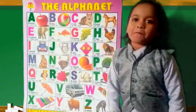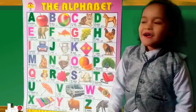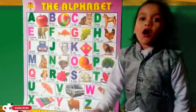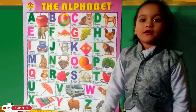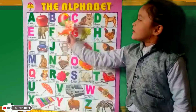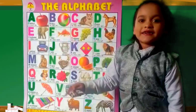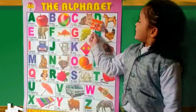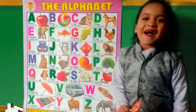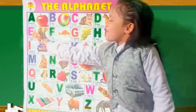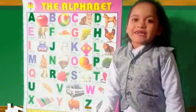A for apple, B for ball, C for cat, D for dog, E for elephant.